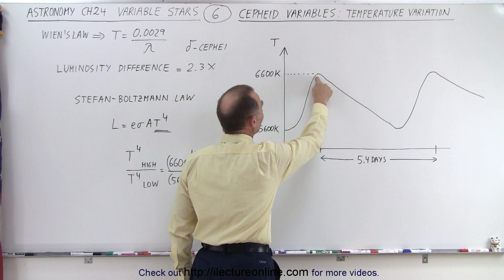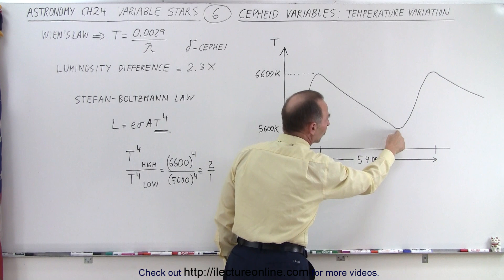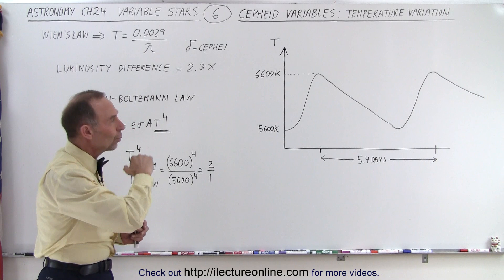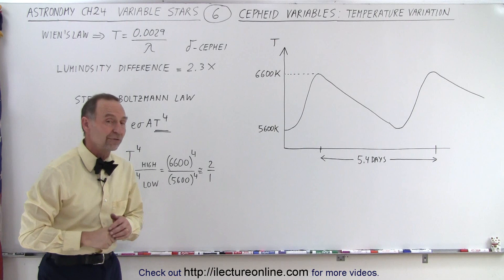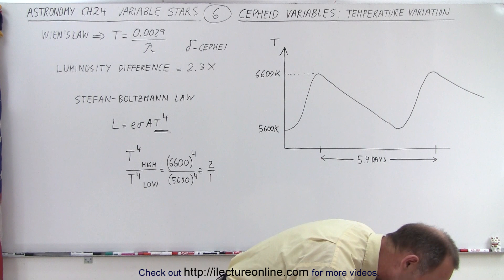Notice that the hottest temperature here pretty well coincides with the maximum intensity, and the lowest temperature pretty well coincides with the lowest intensity. So we can see that it's probably very closely related to the surface temperature of these Cepheid variables, and that is how we figured it out.